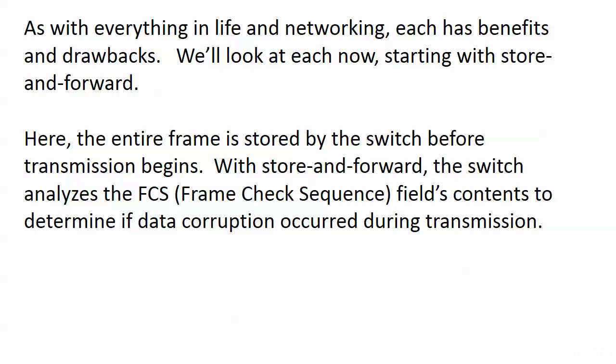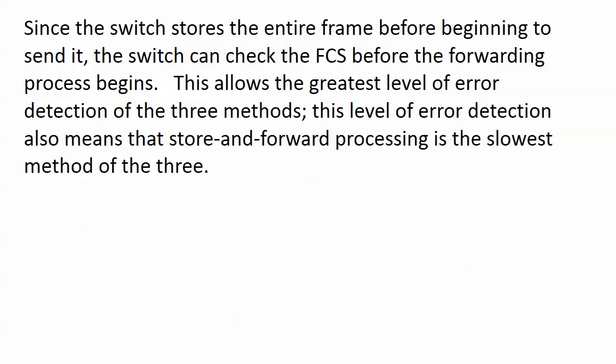Store-and-forward is the most common processing method today. The entire frame is stored by the switch before transmission or forwarding begins. The switch also analyzes the Frame Check Sequence (FCS) field to see if any data corruption occurred during transmission. Since the switch stores the entire frame before forwarding, it can check the FCS first and detect problems before forwarding. This allows the greatest level of error detection of the three methods — but store-and-forward is also the slowest of the three.